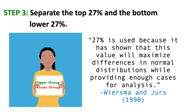Step 3: Separate the top-upper 27% and the bottom-lower 27% of the cases. The 27% of students at the top and the 27% at the bottom are separated for the analysis. Arsmengers stated that 27% is used because it maximizes differences in normal distributions while providing enough cases for analysis. There need to be as many students as possible in each group to promote stability, while the two groups should be as different as possible to make the discriminations clearer. This was supported by Kelly (as cited in Popham, 1981), who stated that 27% maximizes these two characteristics. After doing this, just set aside the middle set of test papers.